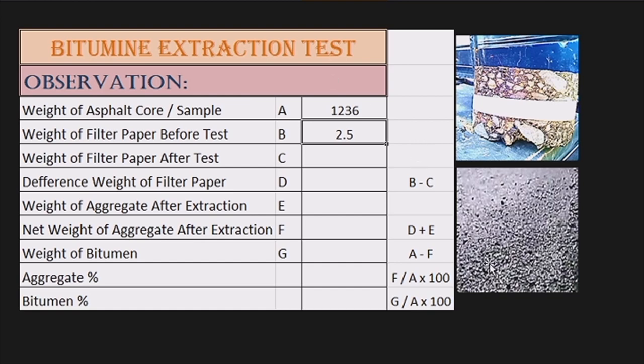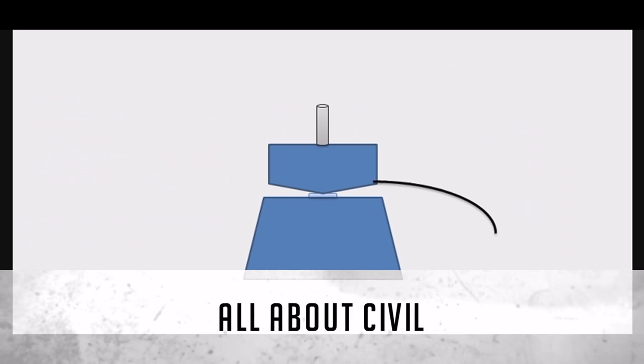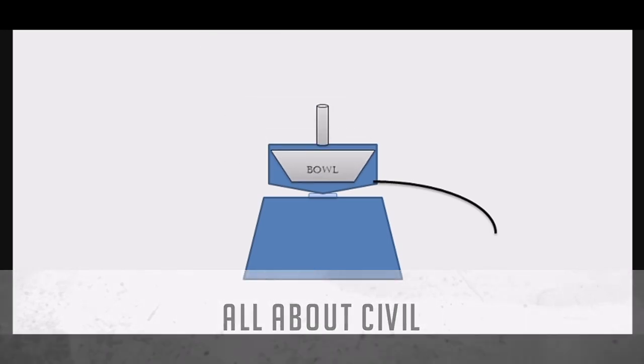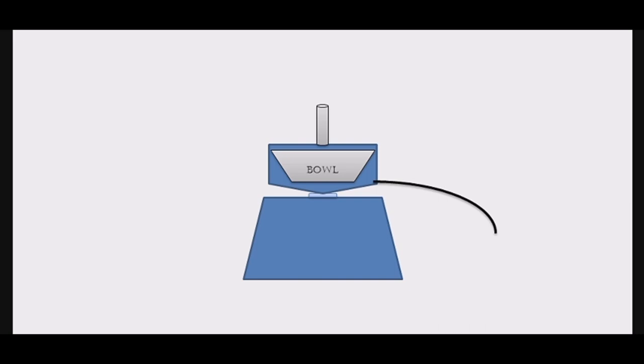We put a bowl in the machine and put the sample in the bowl. Then we put a filter paper, which will not be removed from the material. Then we put a plate and lock it up. Then we put a cap to the machine.